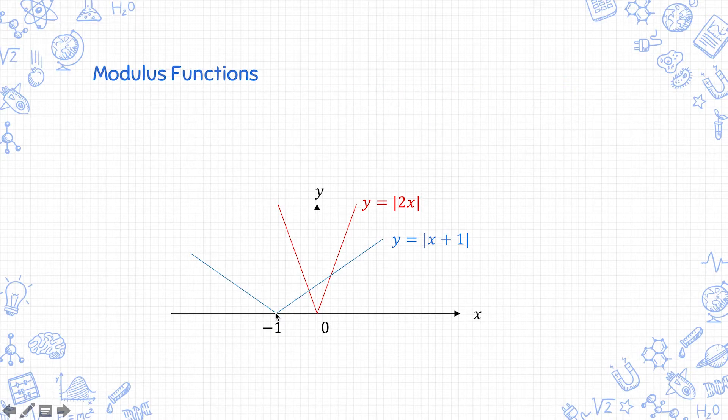So if I give you an inequality where both sides are unknown such as mod of x plus 1 greater than mod of 2x, it is most advisable to solve by sketching and looking at the graph. Sketch the graphs of y equals mod of x plus 1 and y equals mod of 2x on the same diagram as I have done here.